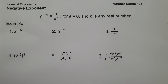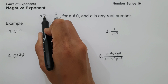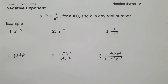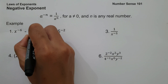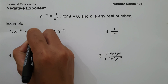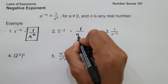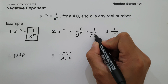Lastly, we have the negative exponent. When we say negative exponent, if we have a raised to negative n, to eliminate the negative sign on the exponent, all you have to do is get the reciprocal: 1 over a raised to n, for a not equal to 0 and n any real number. On example one, we have x raised to negative 6. Getting the reciprocal gives us 1 over x raised to 6. On example two, we have 5 raised to negative 2. This gives 1 over 5 squared, which simplifies to 1 over 25.